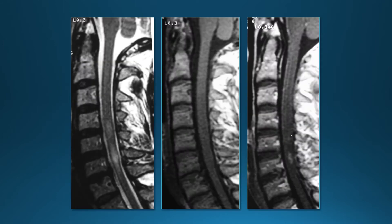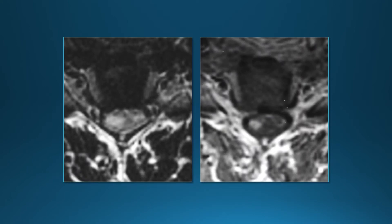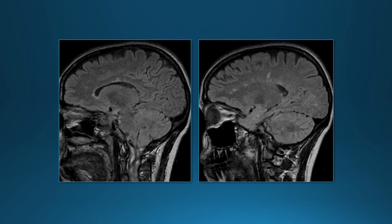Another patient with multiple sclerosis shows a little bit of cord expansion — an enhancing active lesion can sometimes cause cord expansion. Axial images again show involvement of the spinal cord white matter, and on brain imaging we see the typical Dawson's fingers.